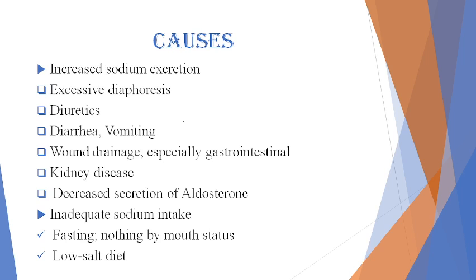What are the causes of hyponatremia? Why does sodium depletion happen in our body? The first cause is increased sodium excretion. In some conditions, sodium excretion will be more. These conditions include excessive diaphoresis, diuretics, diarrhea, vomiting, wound drainage, gastrointestinal and kidney disease, and decreased secretion of aldosterone. Because of this, hyperosmolality occurs, causing an osmolality shift of water out of the cells, leading to cellular dehydration.